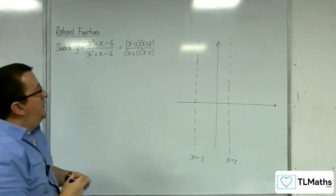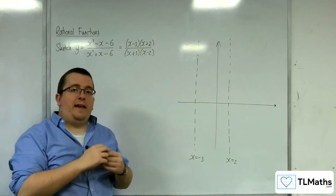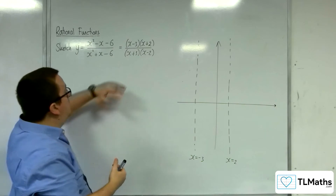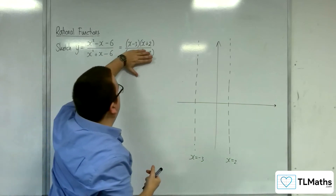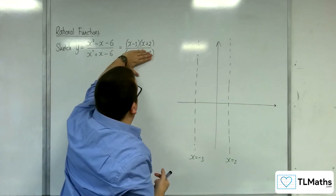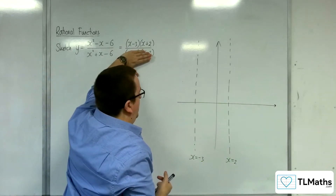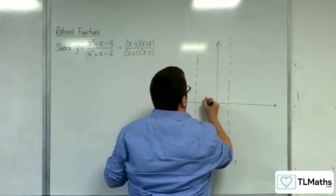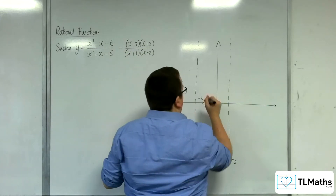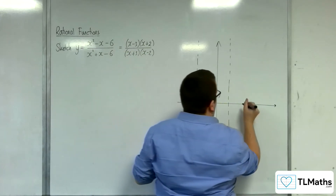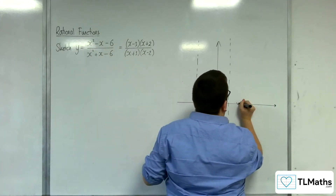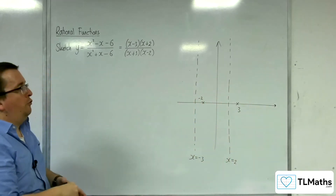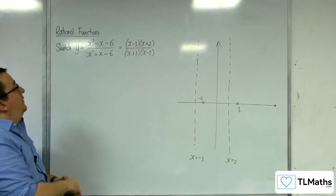Next, work out where it's crossing the x-axis, which is when y is 0. That's when the numerator is 0, so that would be at minus 2 and plus 3. So, minus 2 and plus 3 are where it's crossing the x-axis.